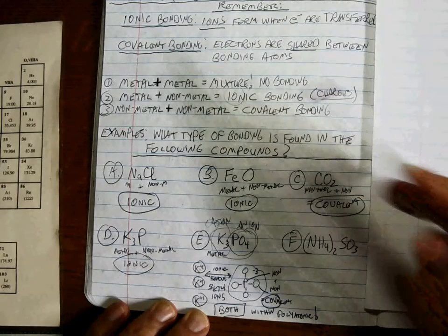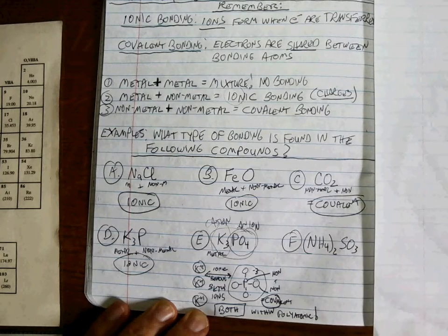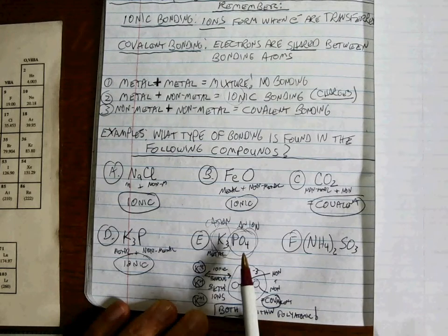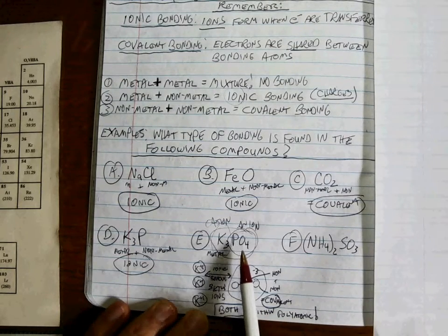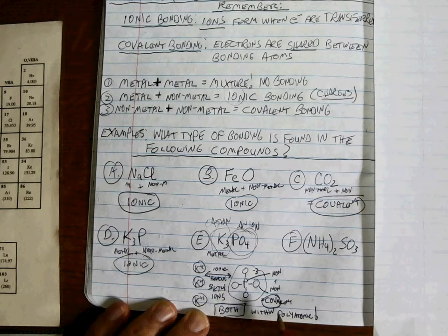Any time you have ions, there's going to be ionic bonding — hence, ionic bonding. But you also have to determine that if you have a polyatomic ion, for sure within that polyatomic ion there's going to be covalent bonding.